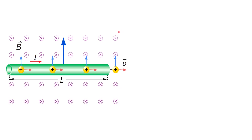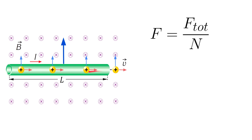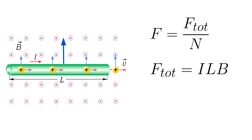To find the force on each charge in a conductor, we must divide the magnetic force by the number of charges in this particular segment. The force on each charge will be the total force on a current-carrying conductor divided by the number of charges. From the previous lesson, the force on a current-carrying conductor is the product of the current, the length of the wire, and the magnetic field strength.